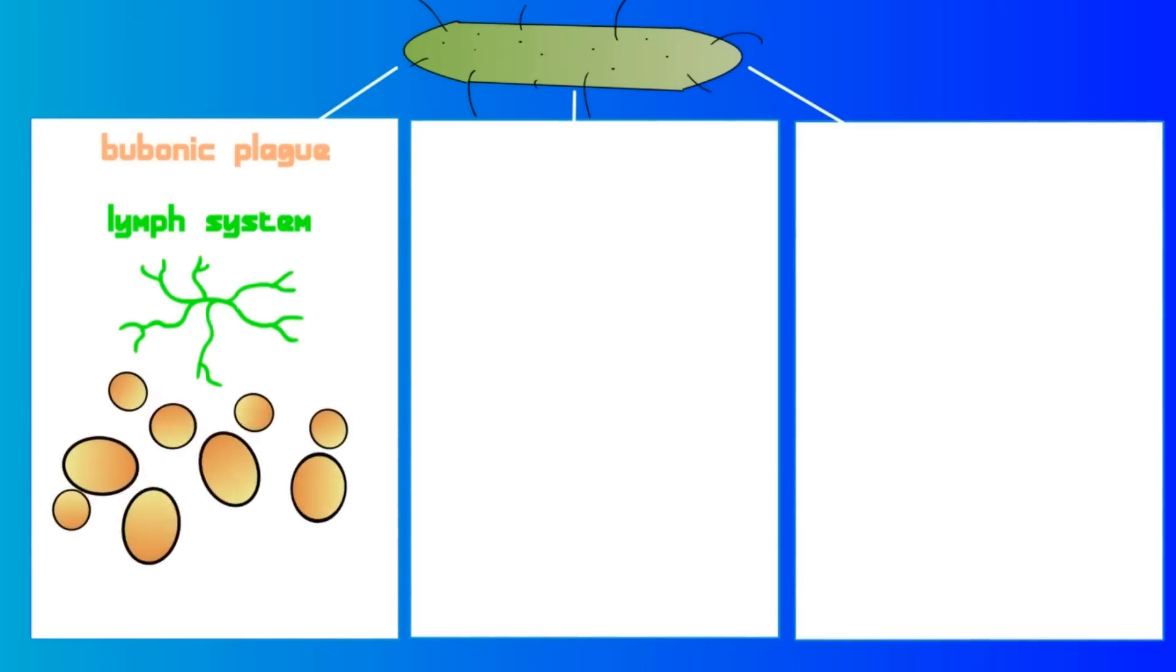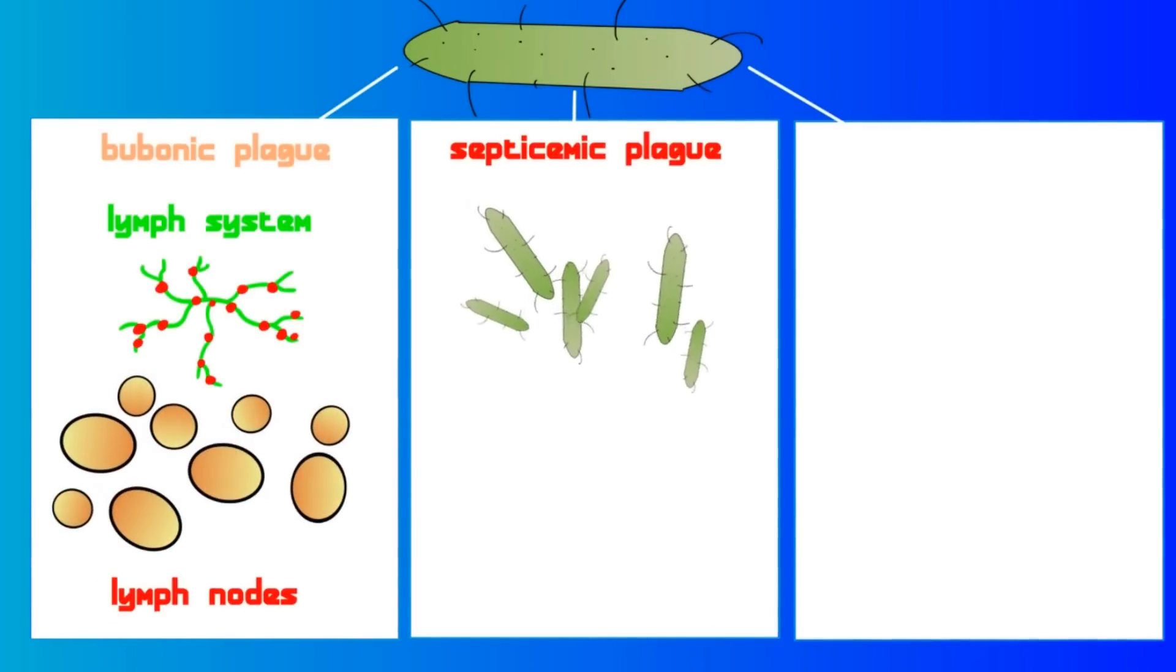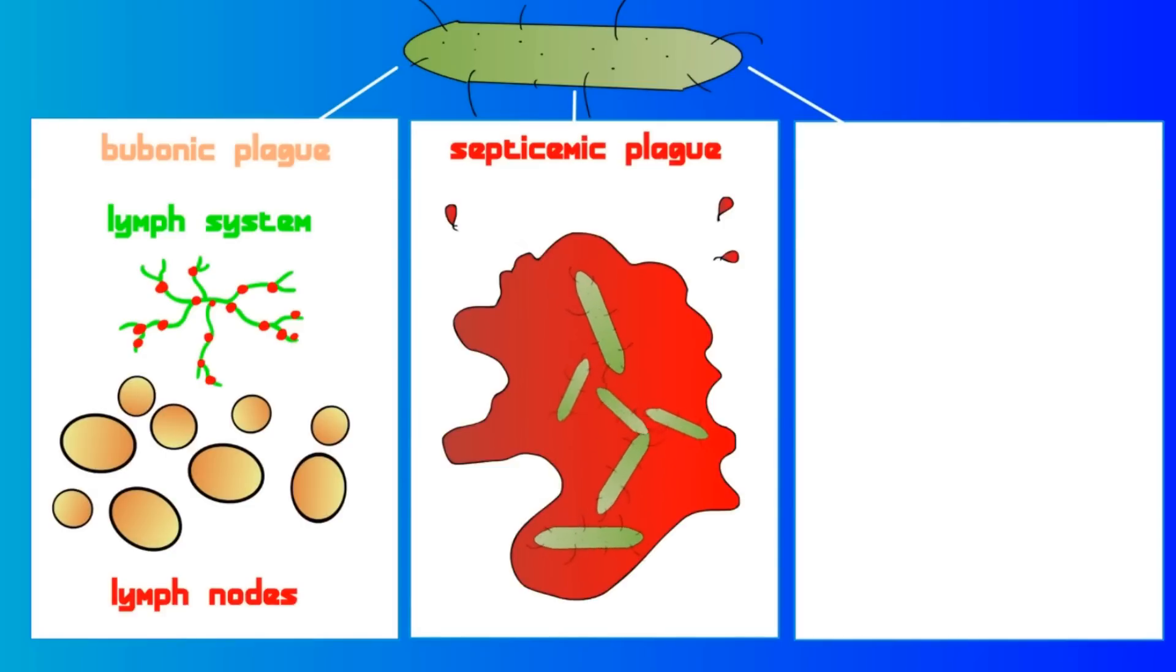There are three different types of plague, all caused by the same bacteria, Yersinia pestis. Bubonic plague, which infects your lymph system and causes huge, blister-like pus bubbles near your lymph nodes. Septicemic plague, which is an infection of your blood. And pneumonic plague, which is an infection of the lungs.